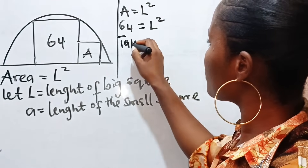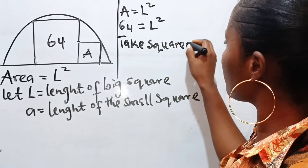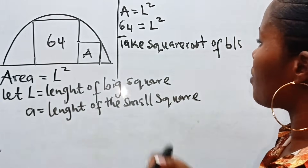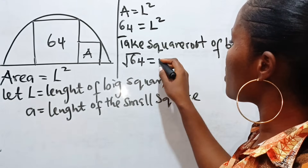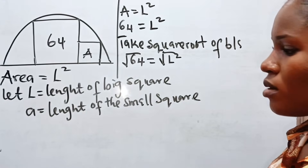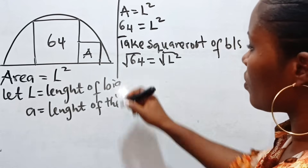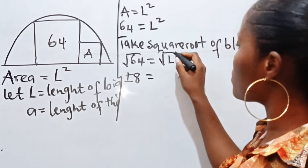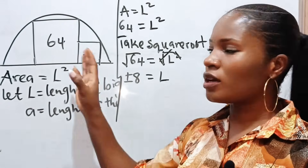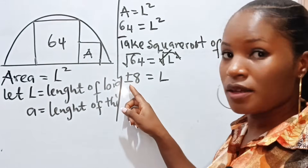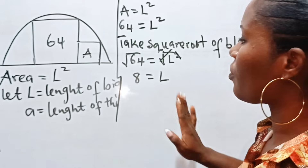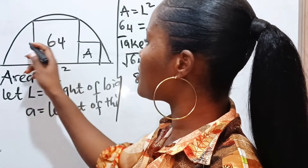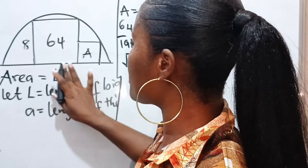Now take the square root of both sides. We have square root of 64 is equal to square root of L squared. The square root of 64 gives us plus or minus 8, and the square root of L squared gives us L. But because we are talking about length, length cannot be negative. Therefore our L is positive 8 — the length of the bigger square is 8.